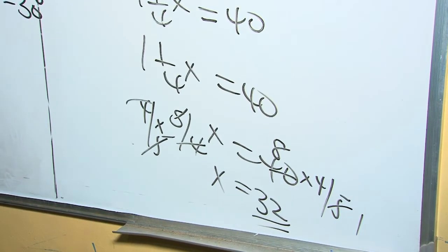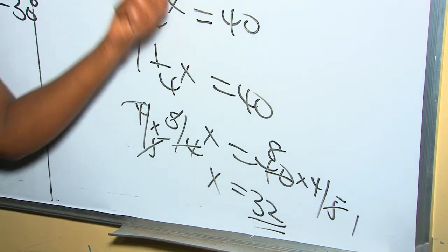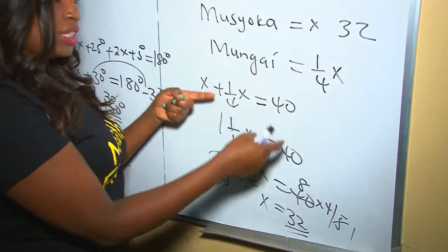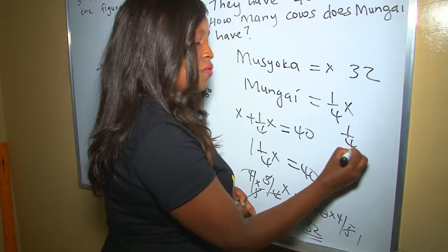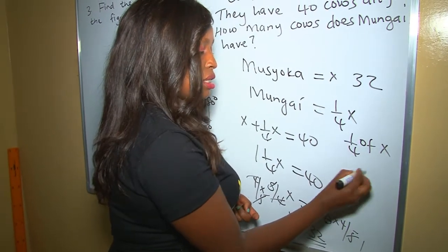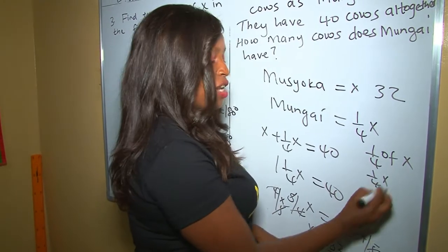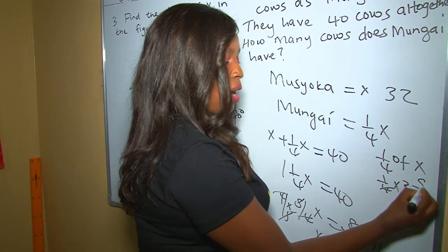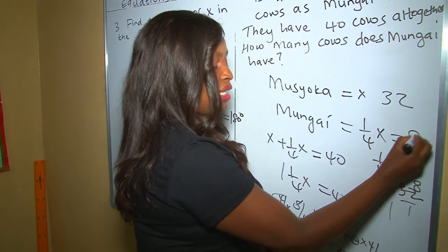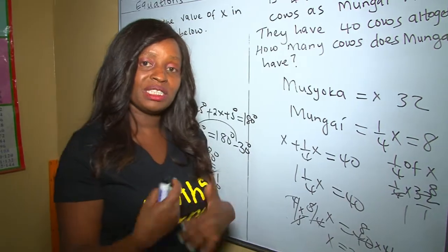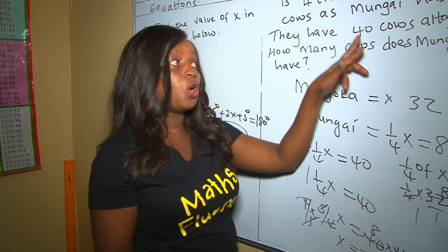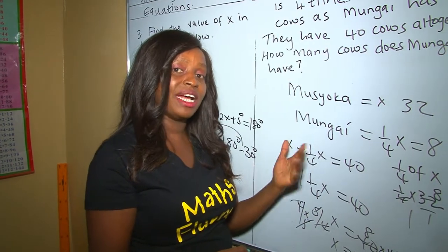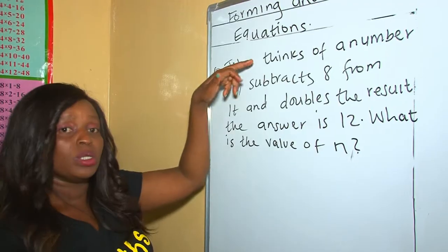Therefore x = 32, meaning Musyoka has 32 cows. Mugai has a quarter of x, so ¼ × 32 = 8 cows. We can verify: 32 + 8 = 40 cows altogether, which confirms the answer is correct.